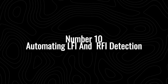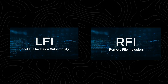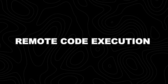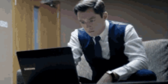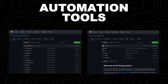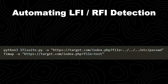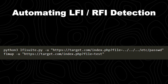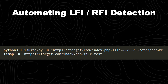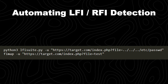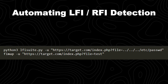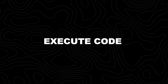Number 10: automating LFI and RFI detection. Local file inclusion (LFI) and remote file inclusion (RFI) vulnerabilities allow attackers to read sensitive files, execute malicious scripts, and even gain remote code execution in some cases. Manually testing for these can be slow, but automation tools like LFI Suite and FIMAP help detect and exploit them efficiently. LFI Suite attempts to exploit LFI vulnerabilities by injecting file traversal payloads to read the system's password file. FIMAP scans for LFI and RFI vulnerabilities in a given URL and, if vulnerable, can help read files, execute code, or escalate privileges.